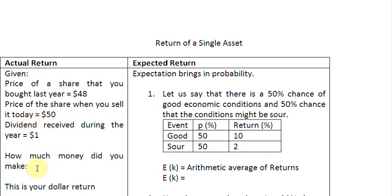So the first question that we need to ask is how much money did you make on your investment? And the answer would be simple. You made $50 because that is the price you sold your share for. And you had bought it for $48. So you take the difference between these two numbers. And then during the year, you had gotten a dividend of $1. So you add that dividend amount here. And so that is going to give you $3 of dollar return.